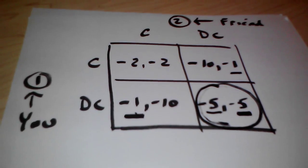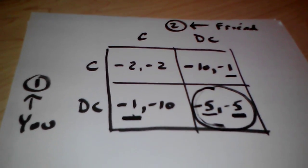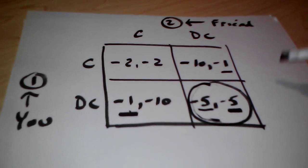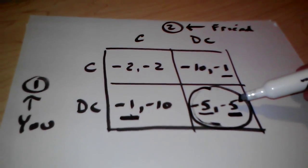It is possible to have no equilibria. It is possible to have multiple equilibria. But in this case, we get exactly one equilibrium, which is negative five, negative five.